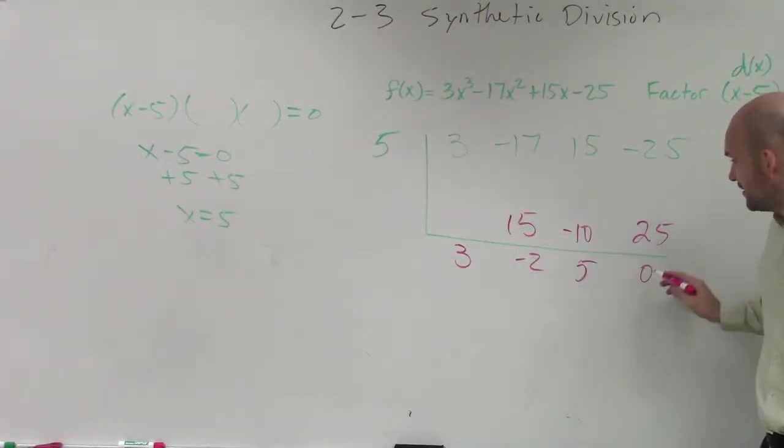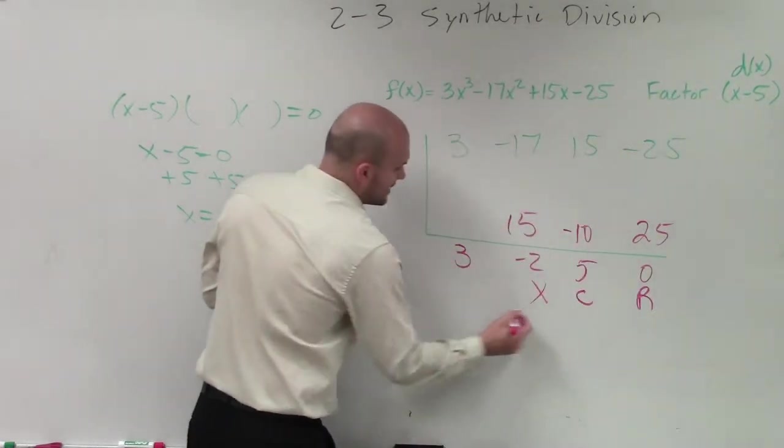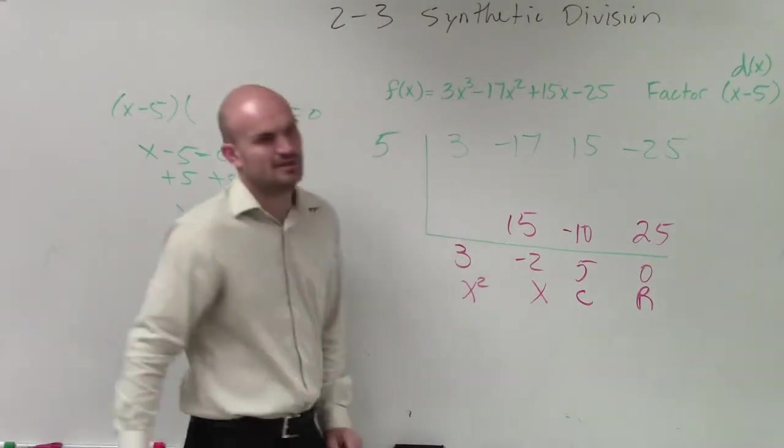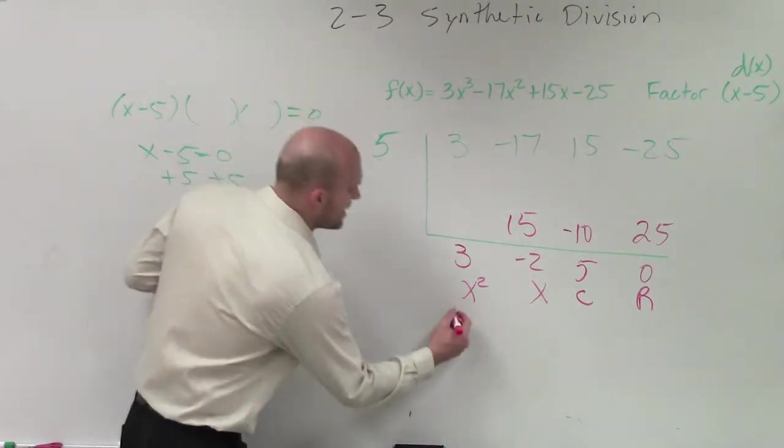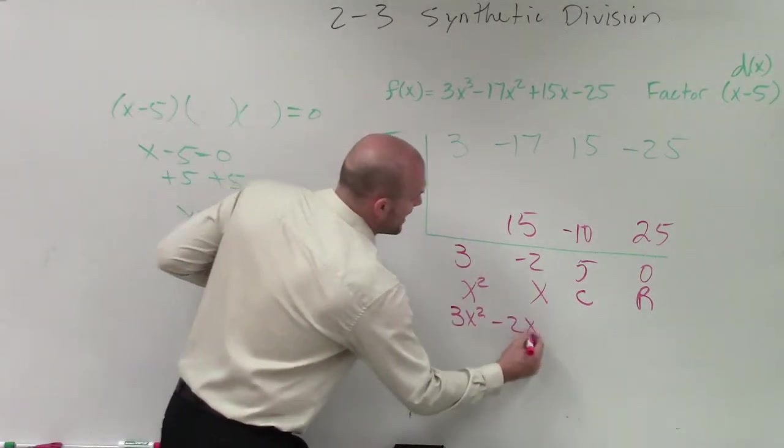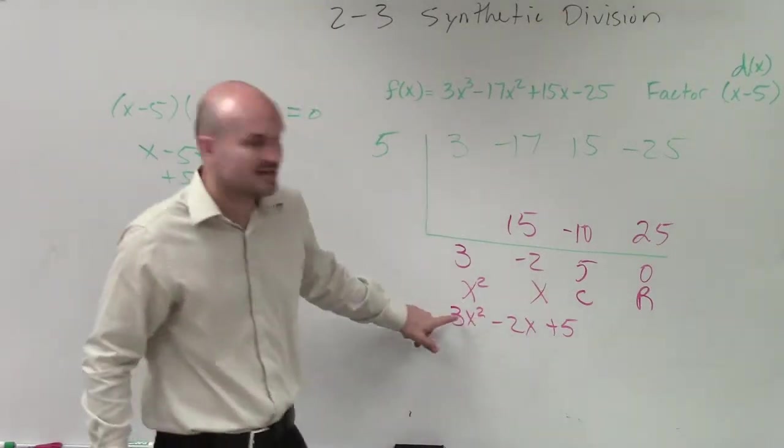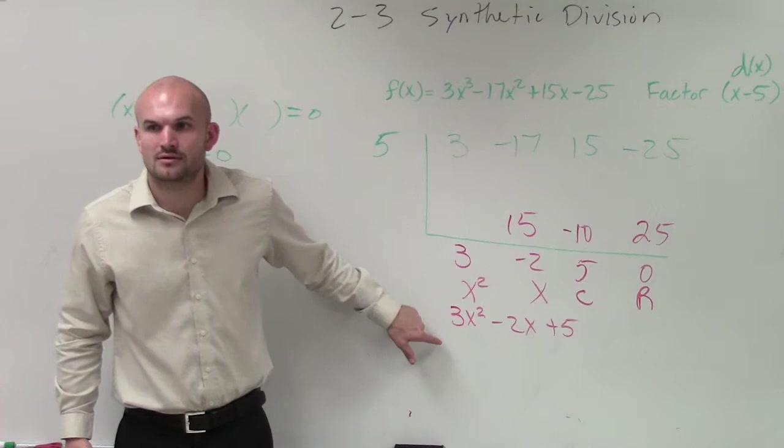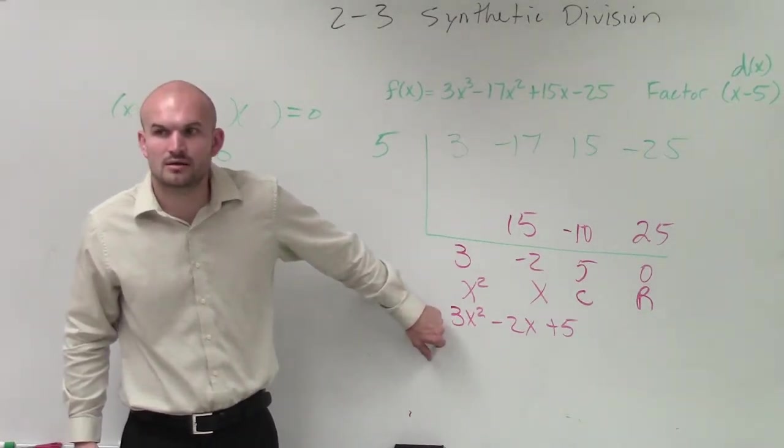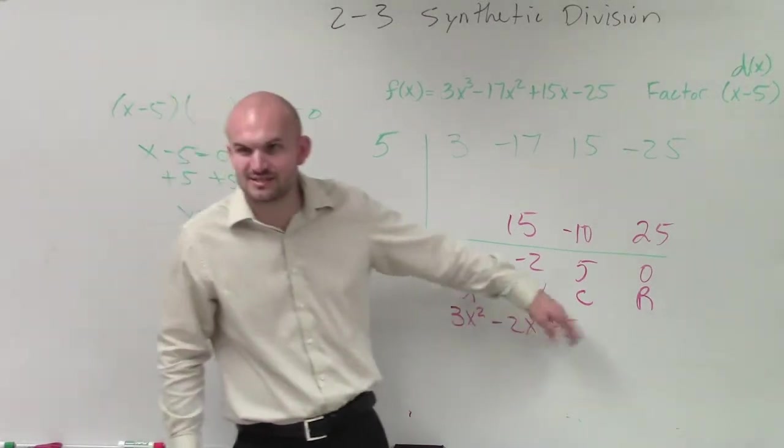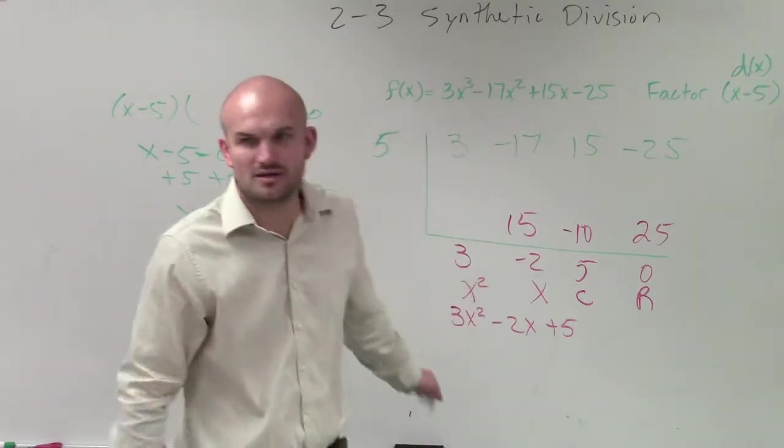All I want you guys to understand is this is what we call our remainder. Then we have our constant, linear, and quadratic. And what I mean by that is these are the coefficients. So, I have 3x squared minus 2x plus 5. Now, when we're going back to that division algorithm, what would you say this is going to be? The what? What would be the name of this function? It is a quadratic, and we can find the rest of the zeros. But remember, guys, I only gave you f of x, d of x, q of x, r of x. What would you call this one? Because this is the what?